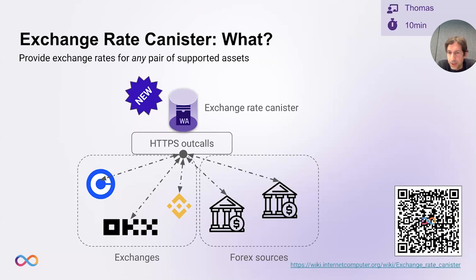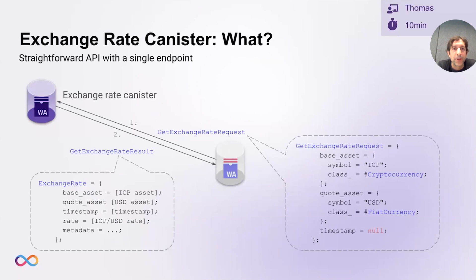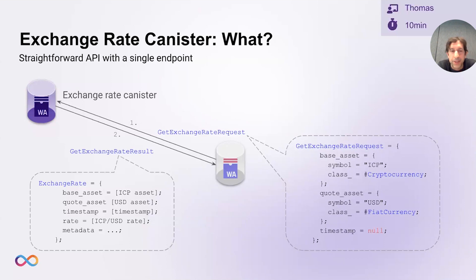Here you can see the exchange rate canister has a very simple interface, essentially consisting of a single endpoint. A canister has to send an exchange rate request to the exchange rate canister containing a base asset and a quote asset, and potentially also a timestamp if you're interested in historic rates. If you leave it empty, you'll simply get the most recent data. When you get a response, the result will contain an exchange rate, which contains the base asset, quote asset, a populated timestamp, the rate that you requested, and also some metadata — for example, the number of sources that it sent the request to and the number of rates it received.